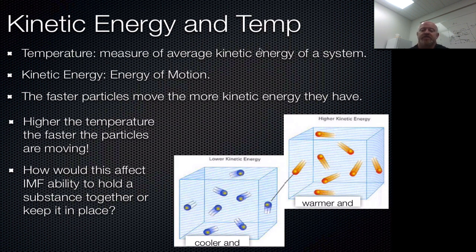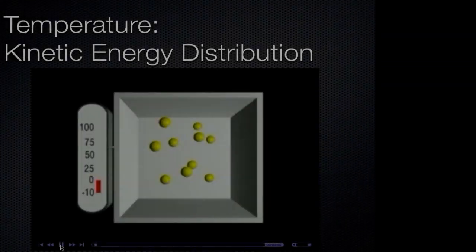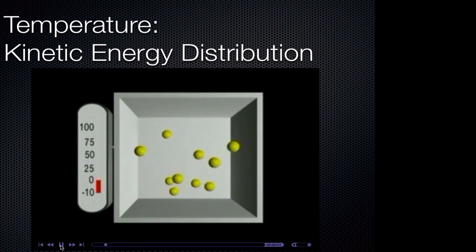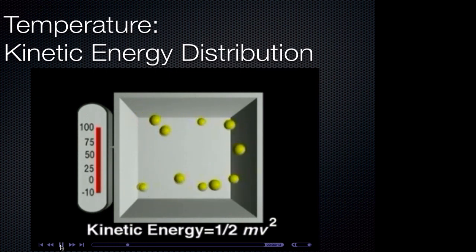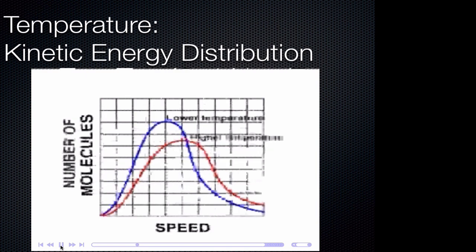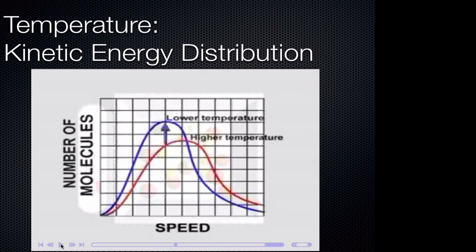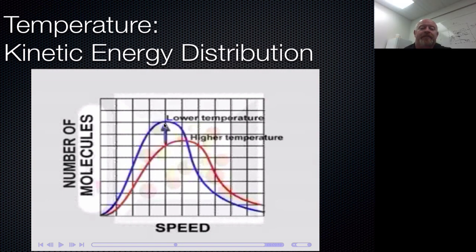Notice that the definition says average kinetic energy — not total energy. We're taking an average of the sample, which means some particles have more energy and some have less, but they're all at the same temperature. At any given temperature, the molecules of a gas are in continual motion; at any instant, some molecules have more kinetic energy than others. With increasing temperature, the average kinetic energy increases in proportion to the absolute temperature. This graph shows the distribution of molecular speeds at two different temperatures — the most probable molecular speed, given by the peak of the curve, increases as temperature increases. This peak represents the average speed.